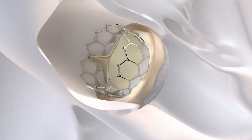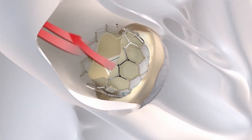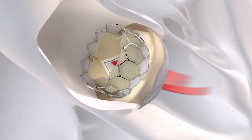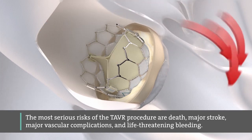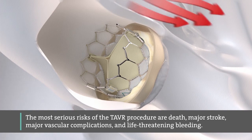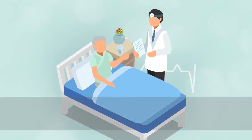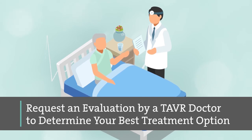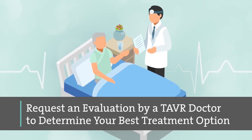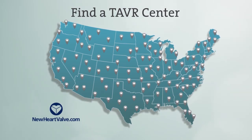Once in place, the Sapien III valve begins functioning immediately, with the leaflets opening and closing to pump blood to the rest of your body. The most serious risks of the TAVR procedure are death, major stroke, major vascular complications, and life-threatening bleeding. If you or someone you know has severe aortic stenosis, only a TAVR heart team can determine which treatment option is best for you. Ask your doctor to refer you for a TAVR evaluation. To find a specialized heart team at a TAVR center near you, visit newheartvalve.com.